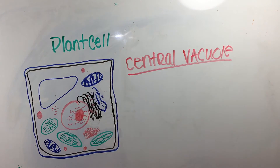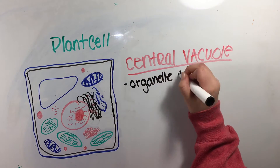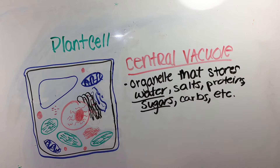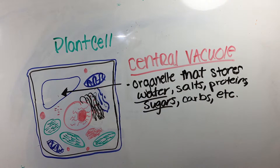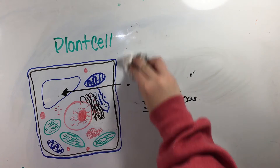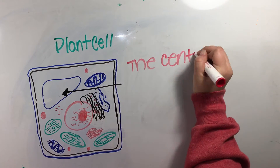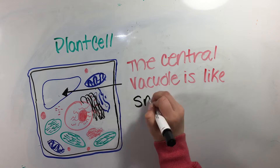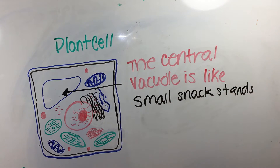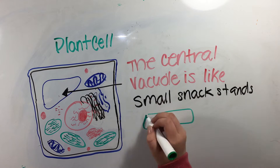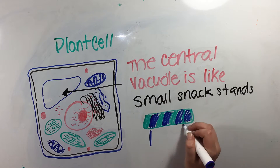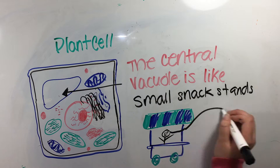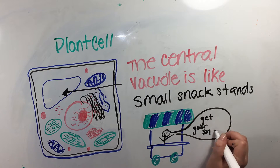The central vacuole is an organelle that stores materials such as water, salts, protein, and carbohydrates. Think of the small snack stands at the zoo. The central vacuole can be compared to a snack stand because they sell water, meals which may have protein, and all food has carbohydrates.